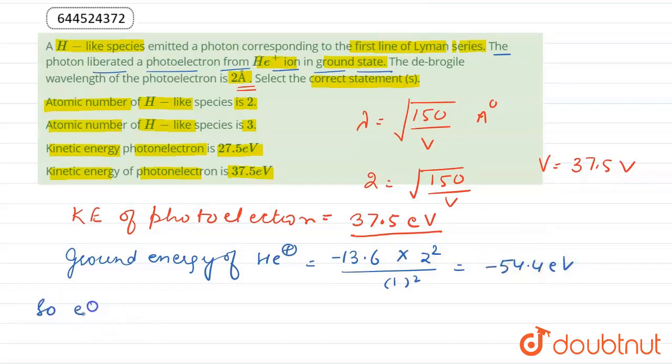So the energy required to liberate electron would be 54.4 electron volt.